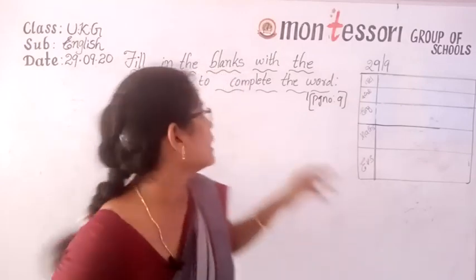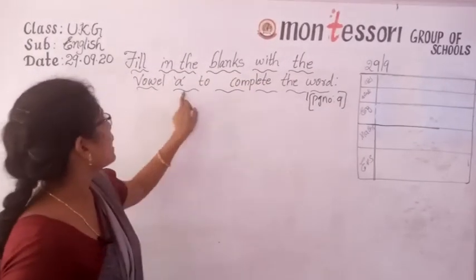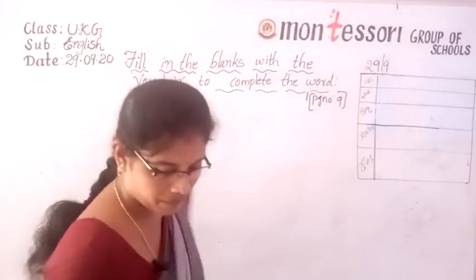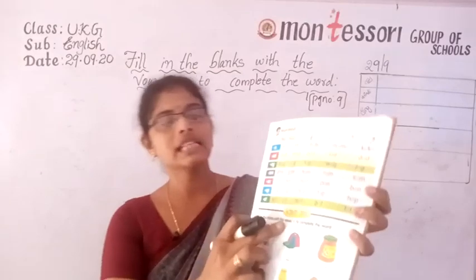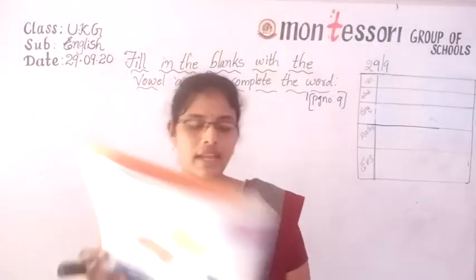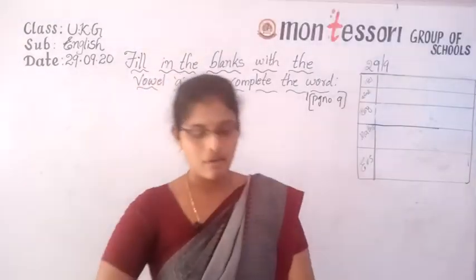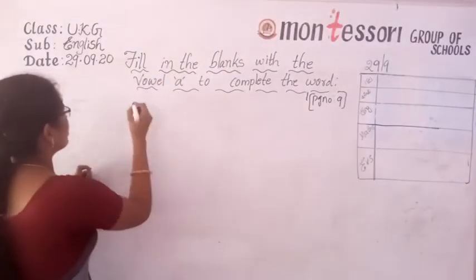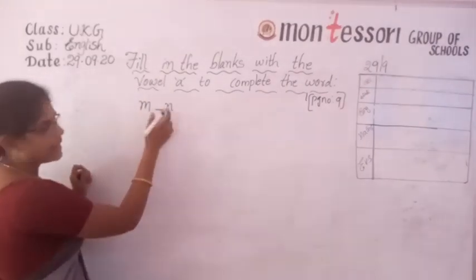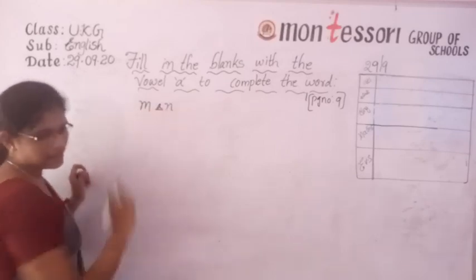Now see what they have given. Fill in the blanks with the vowel A to complete the word. One is given as an example. They have given a man picture and they have given a dash, and they filled in the A. M-A-N, man.